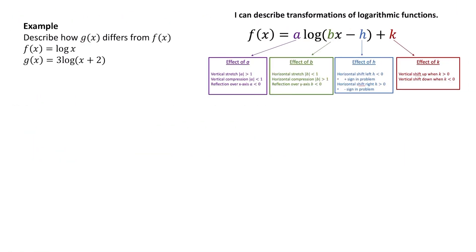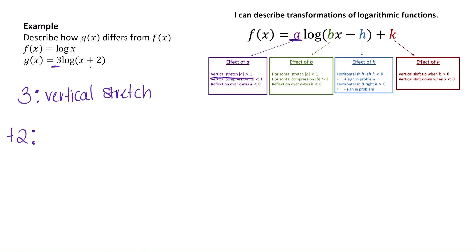Let's describe how g of x differs from f of x. We have the parent function f of x equals log of x, and g of x equals 3 log of x plus 2. That 3 is a value of a — since the absolute value of a is bigger than 1, that gives us a vertical stretch. Then the plus 2 is a value of h; since h is less than zero, we get that plus sign, which shifts the graph to the left two units. So this graph is vertically stretched and shifted to the left two. You can graph both functions in Desmos to verify this transformation.